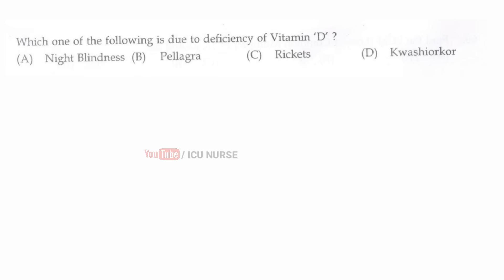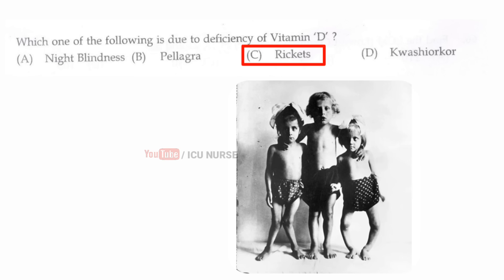Which one of the following is due to deficiency of vitamin D? The correct answer is C, rickets.